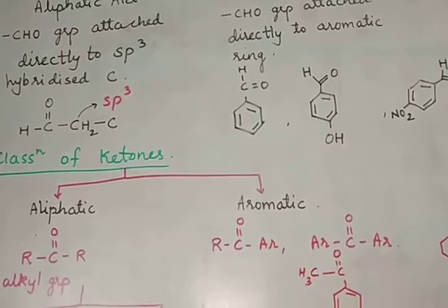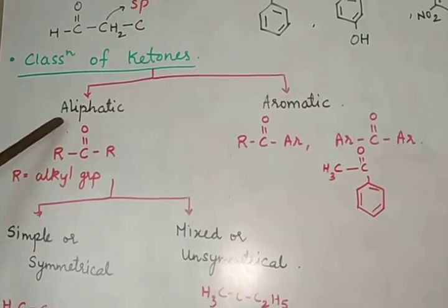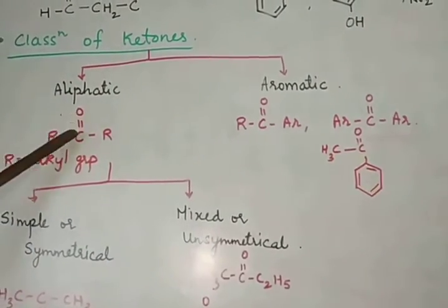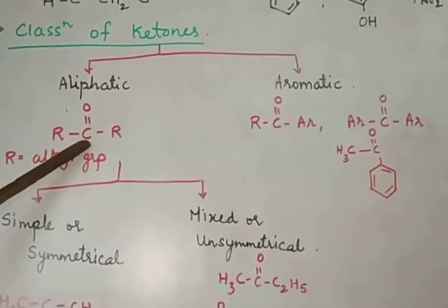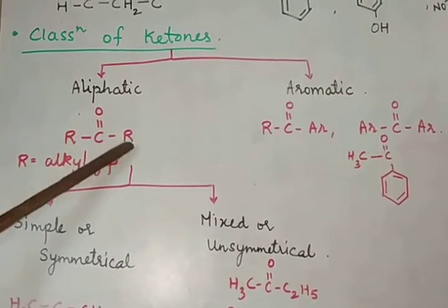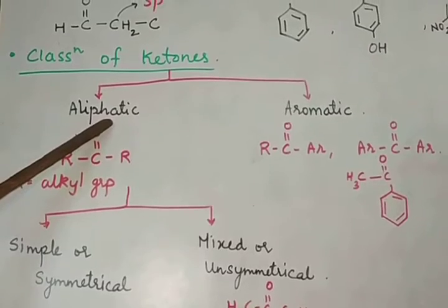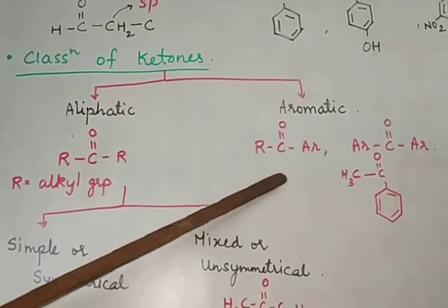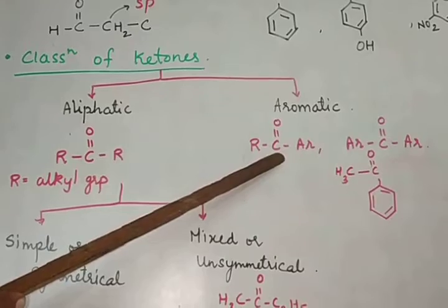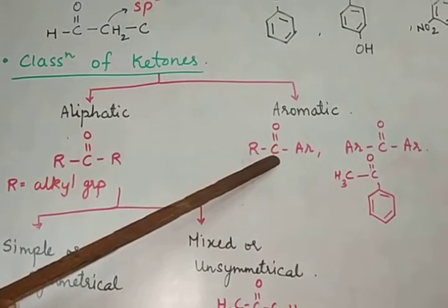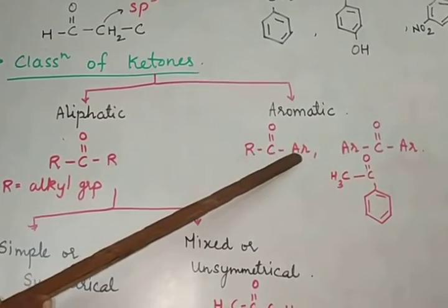Ketones are also classified as aliphatic ketones and aromatic ketones. In aliphatic ketones, the carbonyl carbon C=O is attached to two alkyl groups. In aromatic ketones, the carbonyl carbon has at least one aromatic ring directly attached to it.